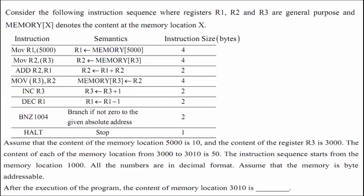Hello everyone, let us solve a question given in GATE 2021. The topic is instruction set architecture. Consider the following instruction sequence where registers r1, r2, and r3 are general purpose. Memory(x) denotes the content at memory location x. There is a program given in which each instruction is depicted.